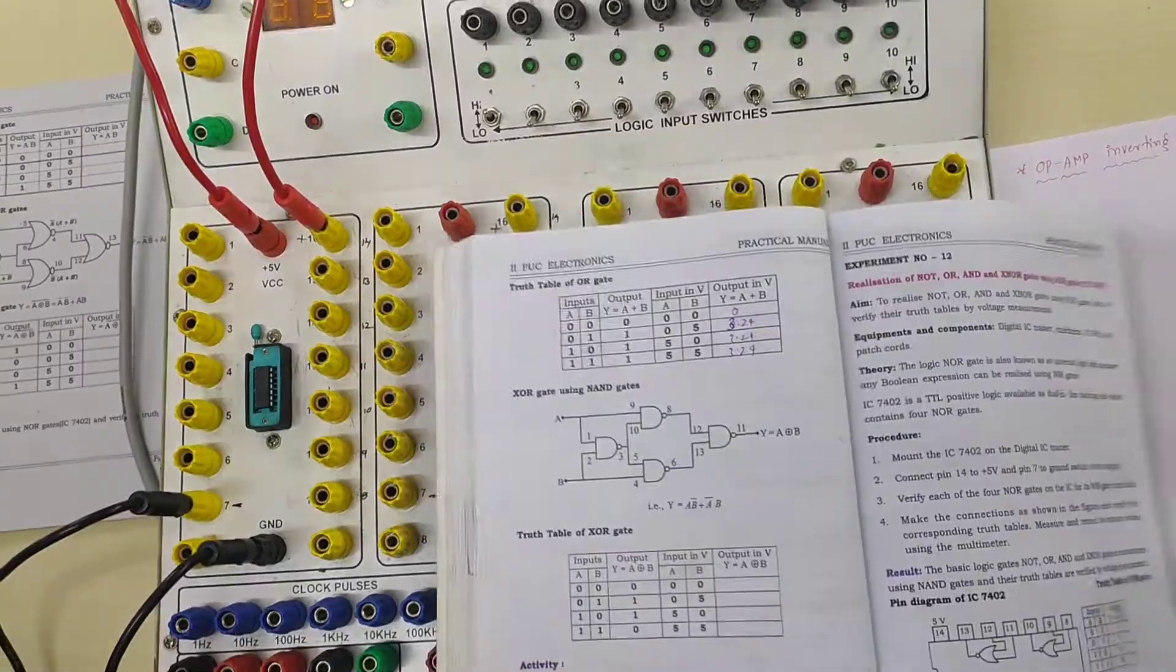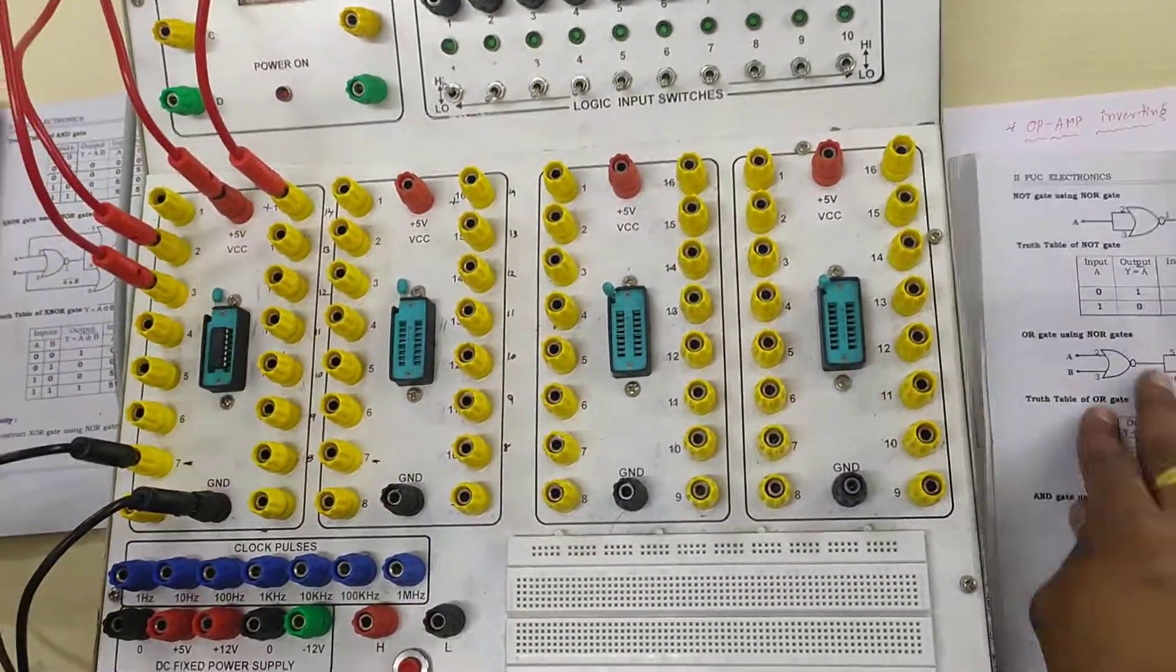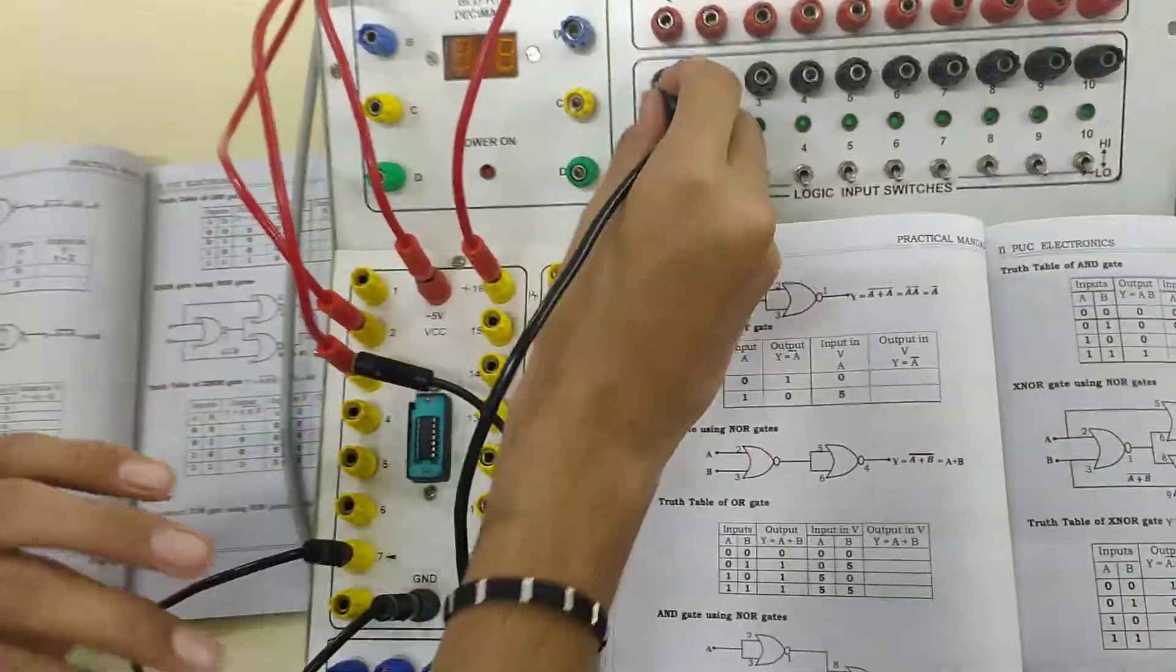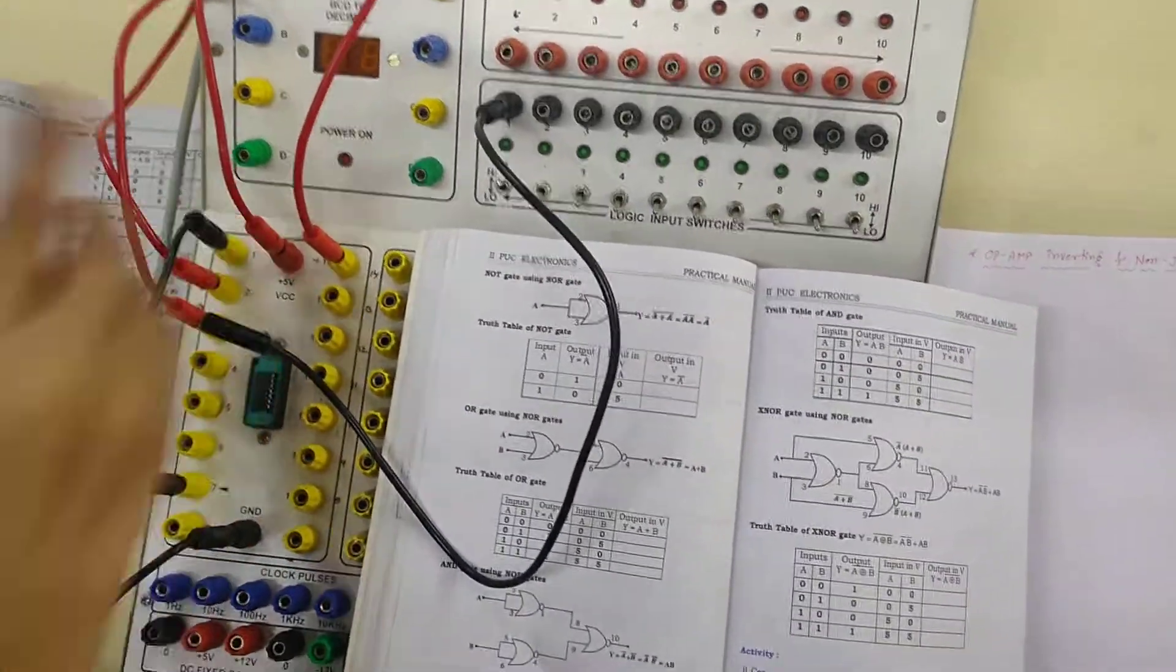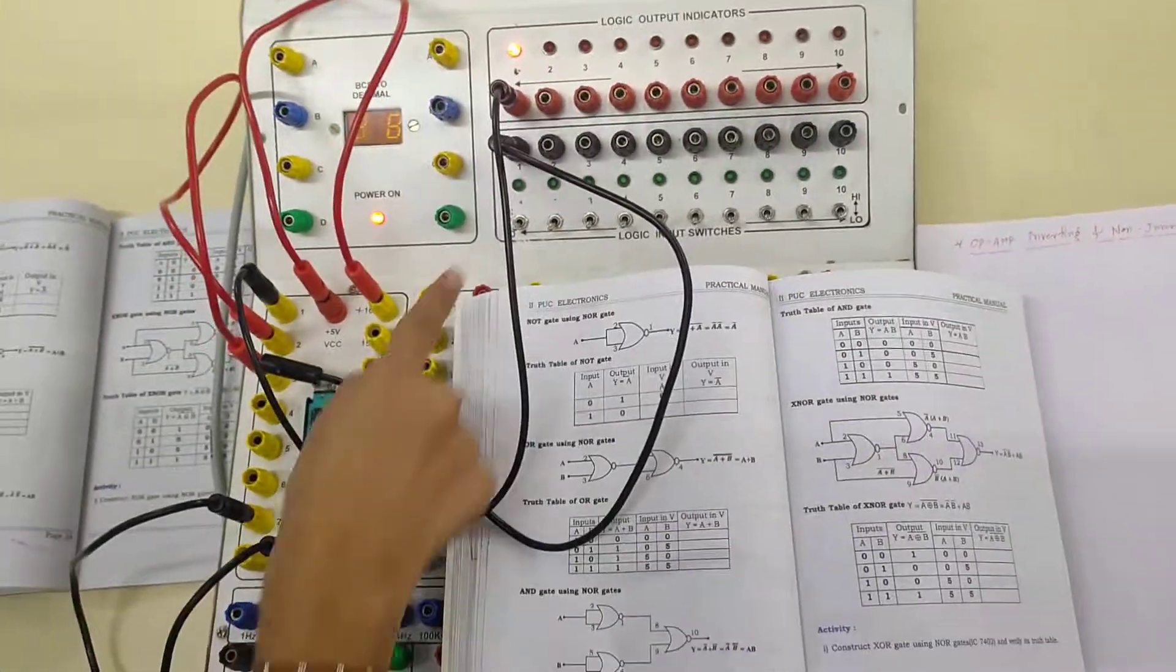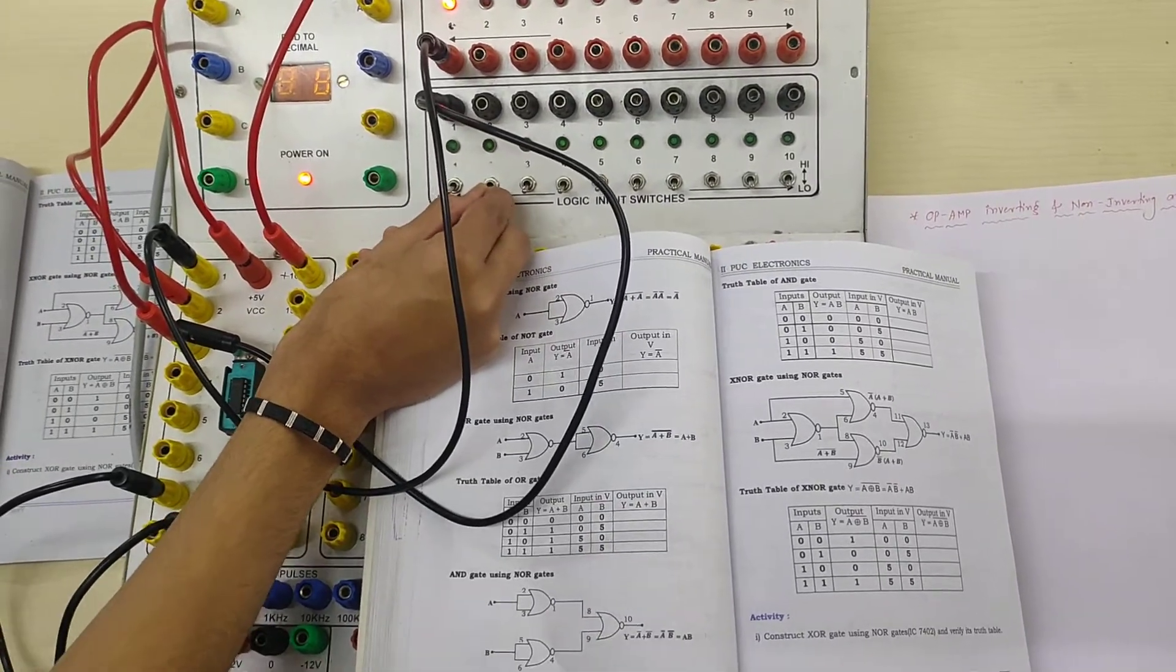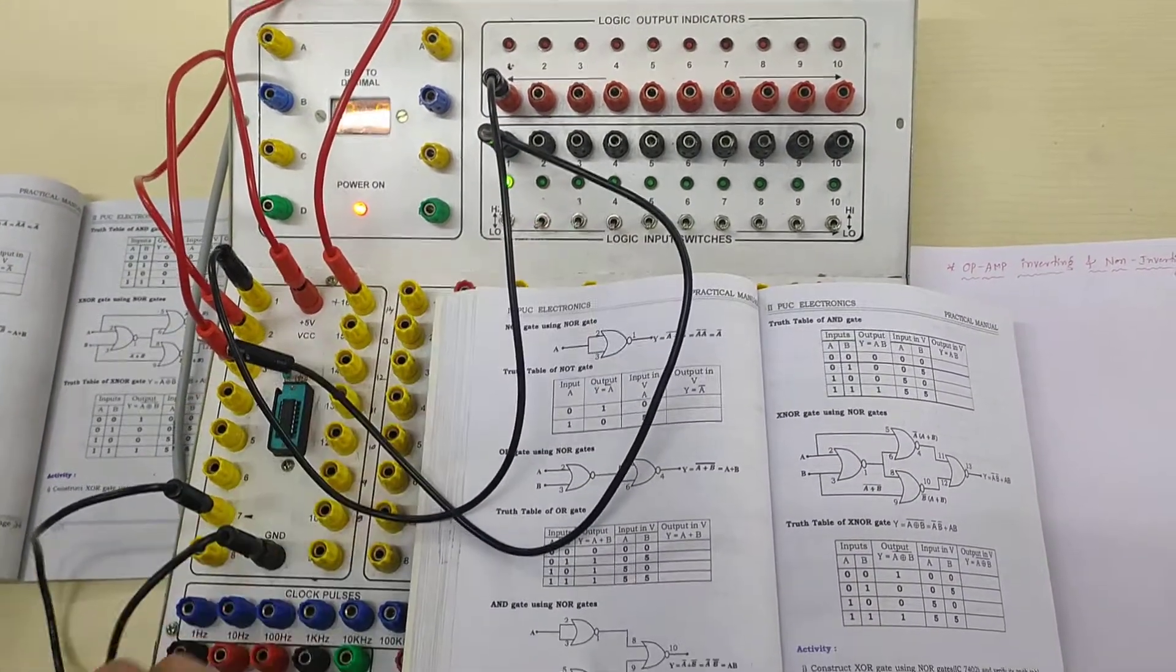Now, yes please first one you verify. Now, you connect. First of all you need to connect 2 and 3, you need to short. Make it on. See input is what? The input is 0, what is the output? 1. Obviously, what is the NOT gate? Input is 0 means output is high. Input is high means output is what? Low. Make it high. It is becoming low. Is it clear? This is what gate? It is NOT gate.